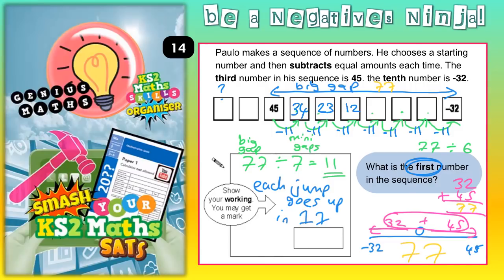Continuing: take 10 off gives 2, then another 1 gives 1. This time take 1 off first to reach 0, then another 10 off gives negative 10. Take 10 off gives negative 20, and another 1 off gives negative 21. Take 10 off gives negative 31, and another 1 gives negative 32 — which is exactly right, that's what we needed to reach.